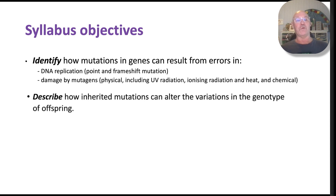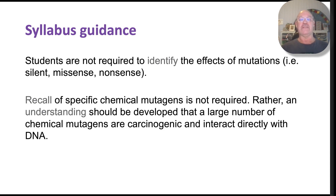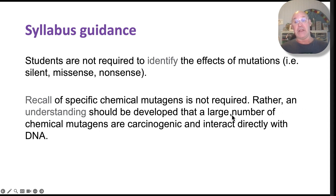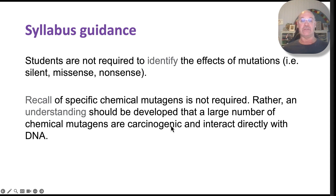These are the syllabus objectives — press pause and go through them to make sure we've covered them all. The guidance notes that you are not required to identify the effects of mutations in terms of silent, missense, and nonsense — we covered those so you understand the impact. The recall of specific chemical mutagens is not required; rather, you need to understand that a large number of chemical mutagens are carcinogenic — meaning they can cause cancer — and interact directly with DNA.